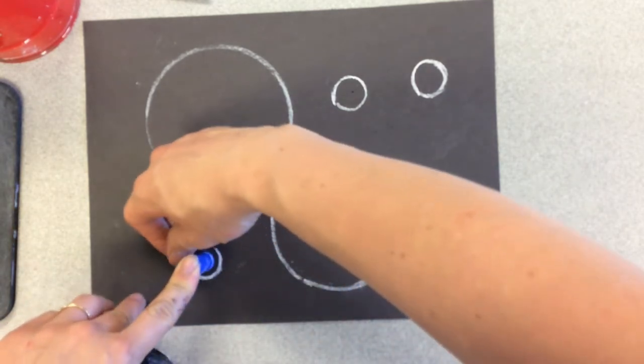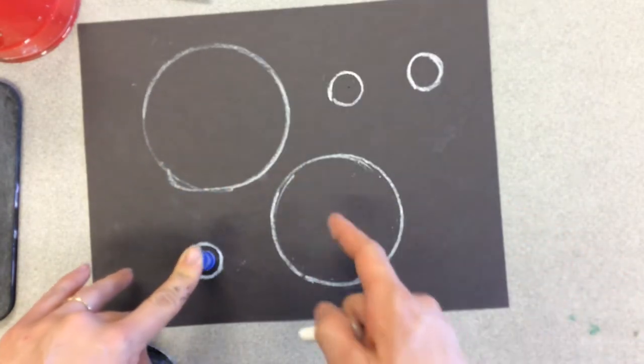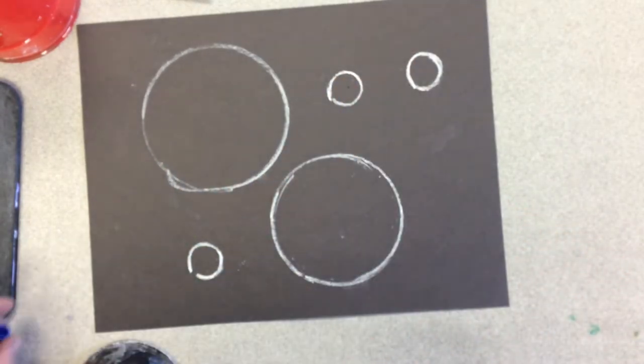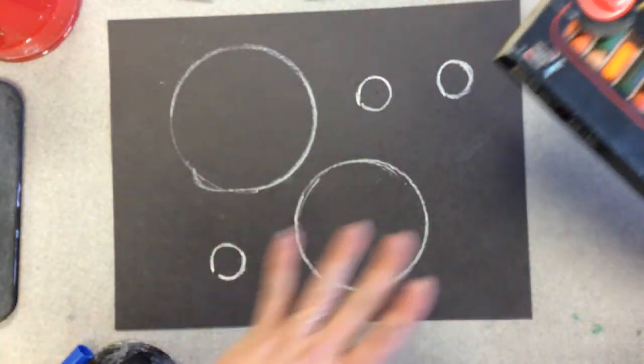Odd numbers are the most pleasing to look at so I have one, two, three, four, five instead of four. Now that I have this I need to add my color.